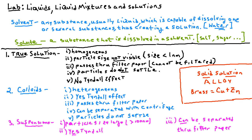A true solution passes through filter paper. Filtration works like a screen on a window — if particles are smaller than the mesh size, they get through. If you leave a true solution indefinitely, the solute will not settle out. Finally, there is no Tyndall effect in a true solution. On the side, a solid solution is known as an alloy.